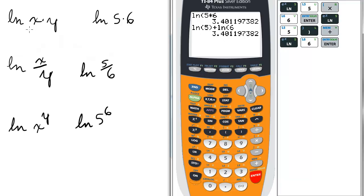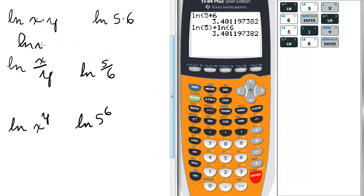So basically, the ln of x times y can be rewritten as two natural logs as the ln of x plus the ln of y.